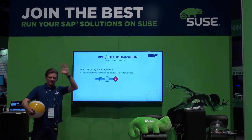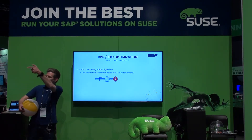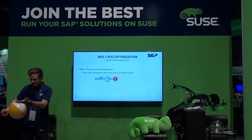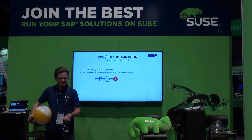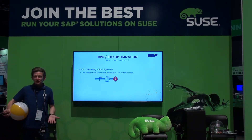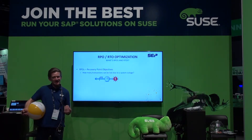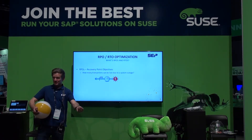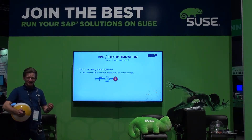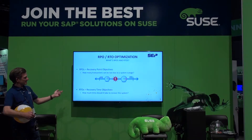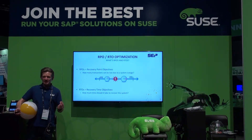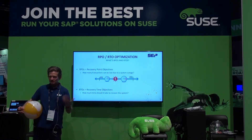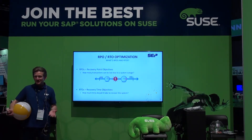So — RPO, RTO: recovery point objective, recovery time objective. How many transactions can you afford to lose? How long can your outage be? What does it cost? Recovery is the other side of that outage. When you're talking RPO and RTO, sometimes you want to decrease your RTO and increase your RPO, or vice versa, depending on your need. It's easy to calculate what an outage costs from a time standpoint, but harder to quantify from a customer standpoint — customers are fickle, and if they're waiting on you during an outage, that has real consequences.